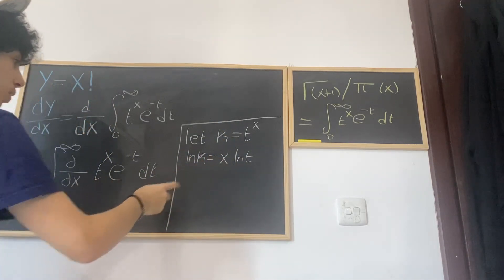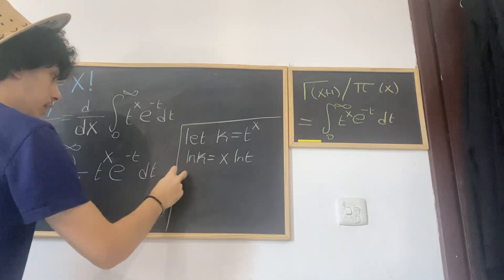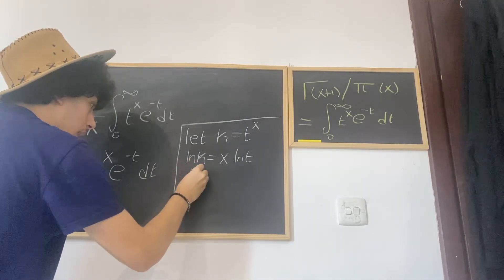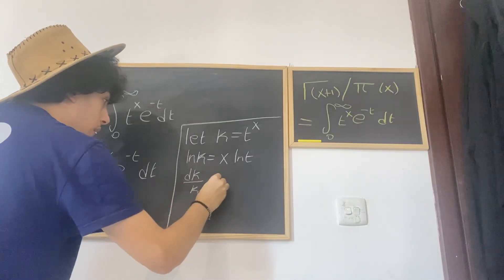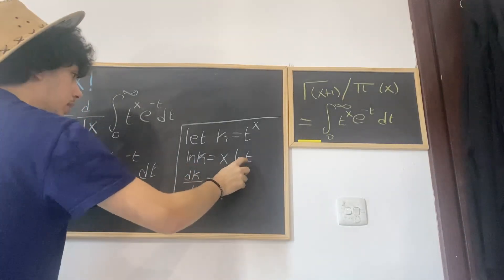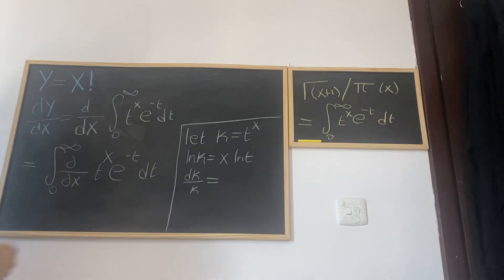And on the right hand side, remember t is a constant, we're treating t as a constant, so ln(t) we treat it as a number. So let's say we want to differentiate 5x, the differential of 5x is just 5.